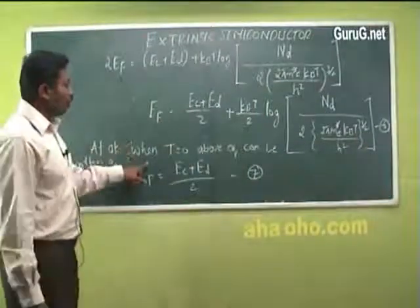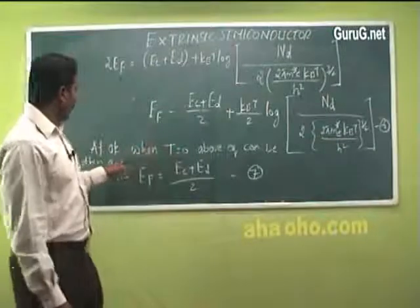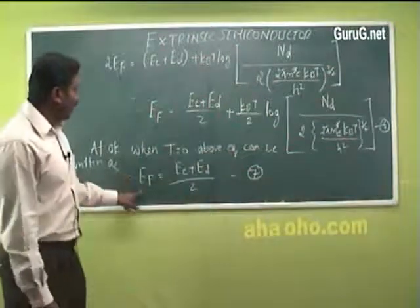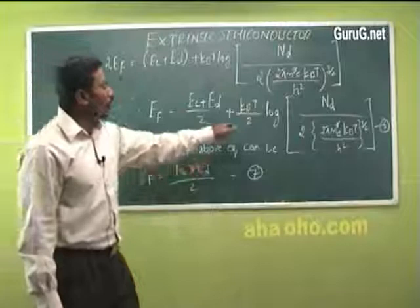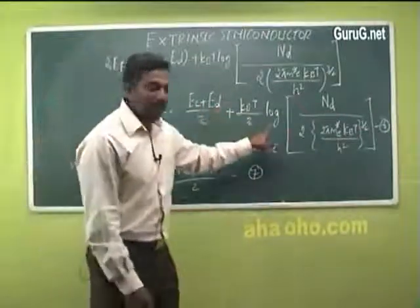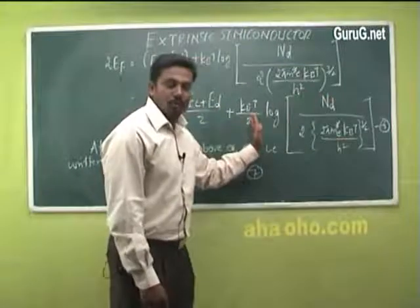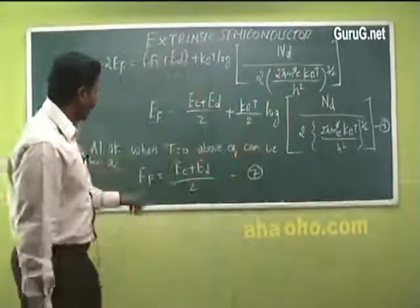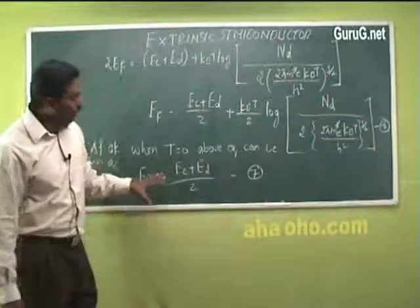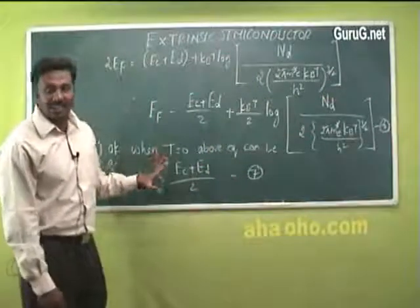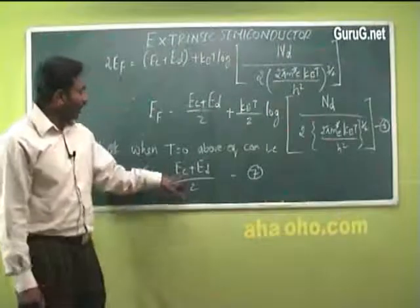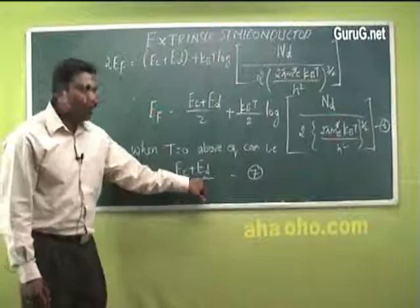At 0 Kelvin (T = 0), equation 6 reduces to E_F = (E_C + E_D) / 2, since all temperature-dependent terms cancel. This tells us that at 0 Kelvin, the Fermi energy level lies exactly midway between the conduction band and the donor energy level.